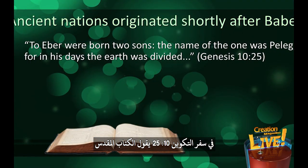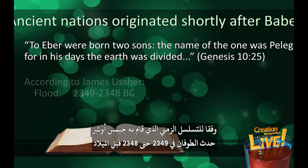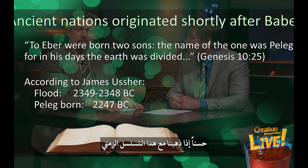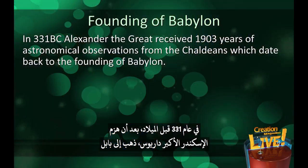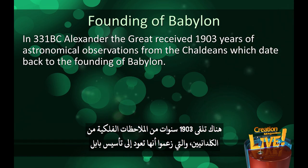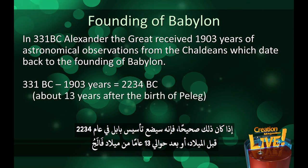What about the timing of when these ancient nations began? We can look at historical records to see if they match the Bible's timeframe. Genesis 10:25 says: 'To Eber were born two sons; the name of the one was Peleg, for in his days the earth was divided' — a reference to the division of peoples at Babel. According to James Ussher's chronology, the flood took place in 2349–2348 BC, and Peleg was born in 2247 BC. In 331 BC, after Alexander the Great defeated Darius, he went to Babylon and received 1,903 years of astronomical observations from the Chaldeans, which they claimed dated back to the founding of Babylon — placing its founding at 2234 BC, about 13 years after the birth of Peleg. Perfect timing.